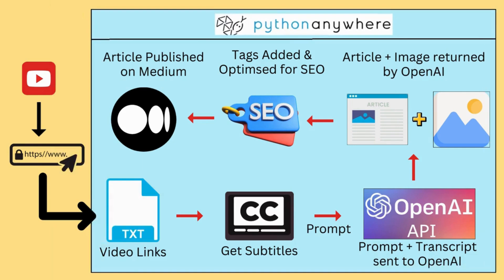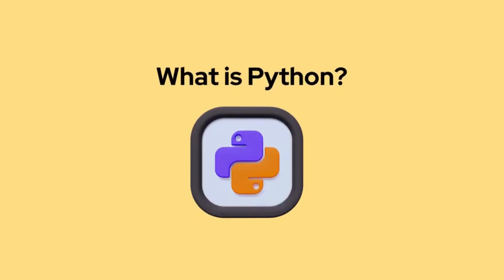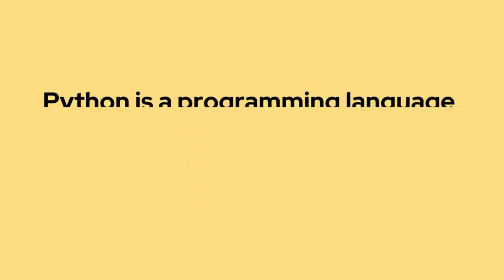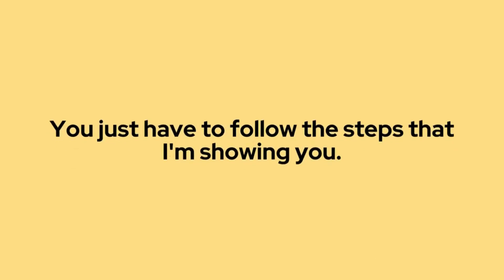We are going to use a platform called Python Anywhere, where we will run this program. Python Anywhere is a platform where you can run Python programs. We're using Python because it's a programming language suitable for building AI tools. I have already created the Python scripts so you don't have to write any code. I've crafted all the scripts — you just have to obtain them and upload them to Python Anywhere. I've done all the back-end heavy lifting from my side.